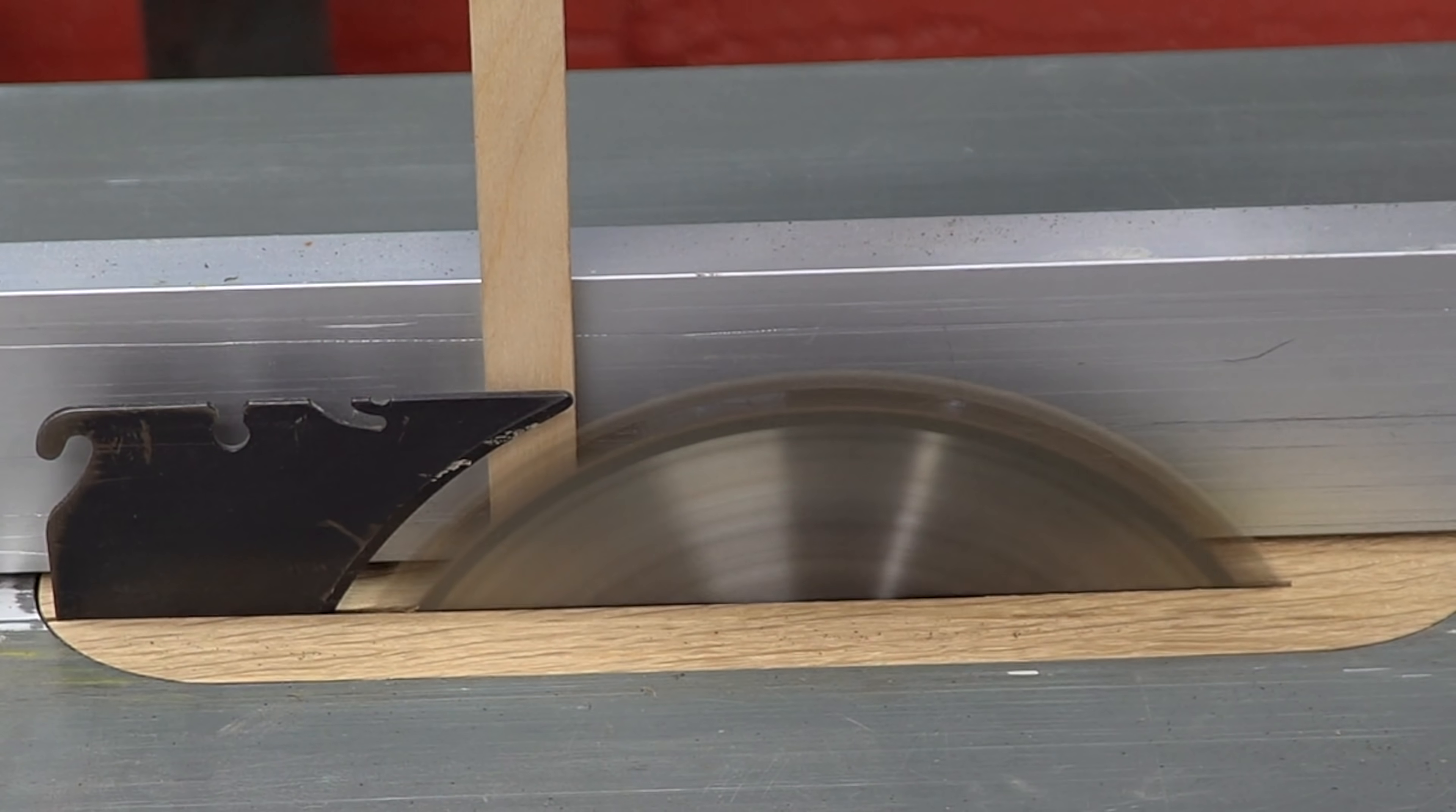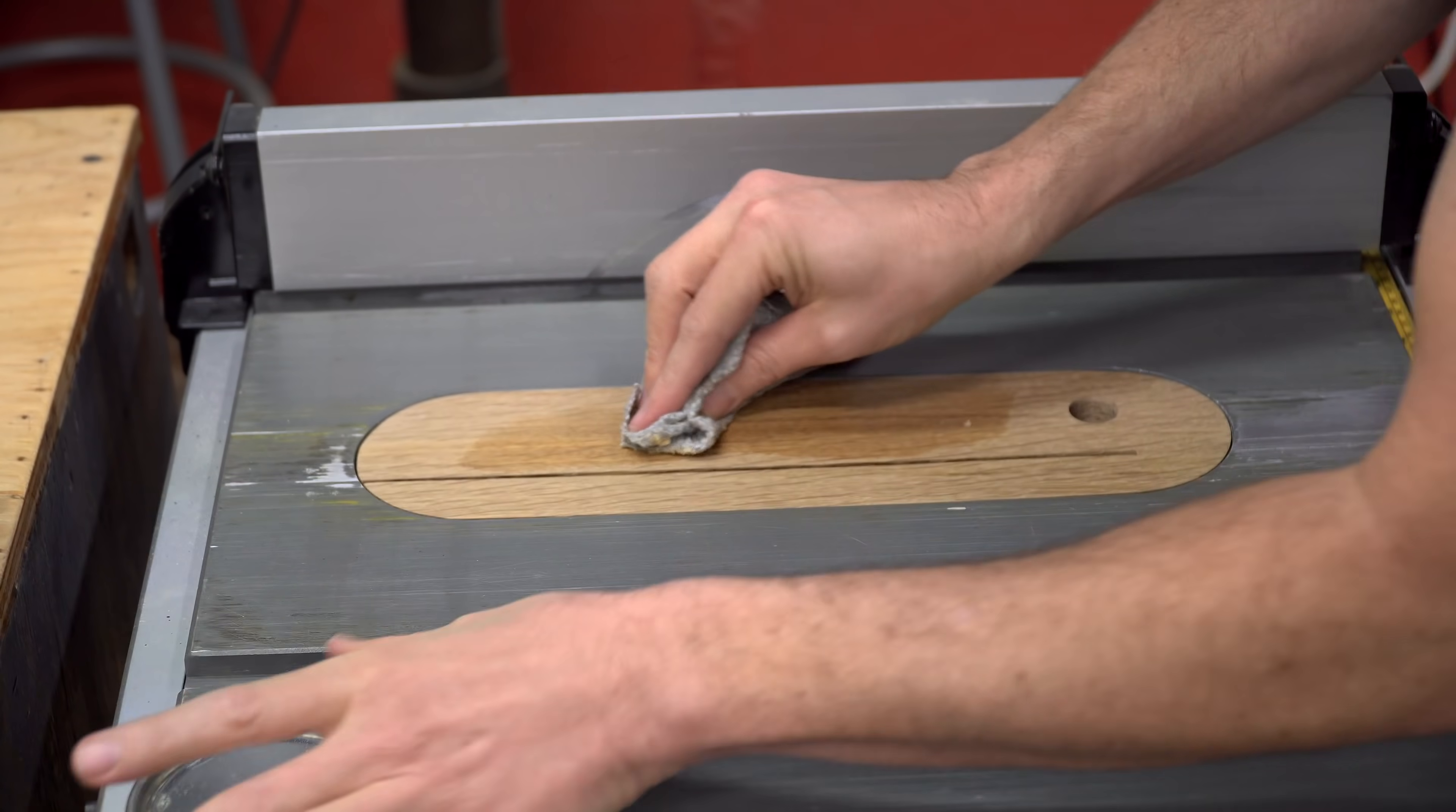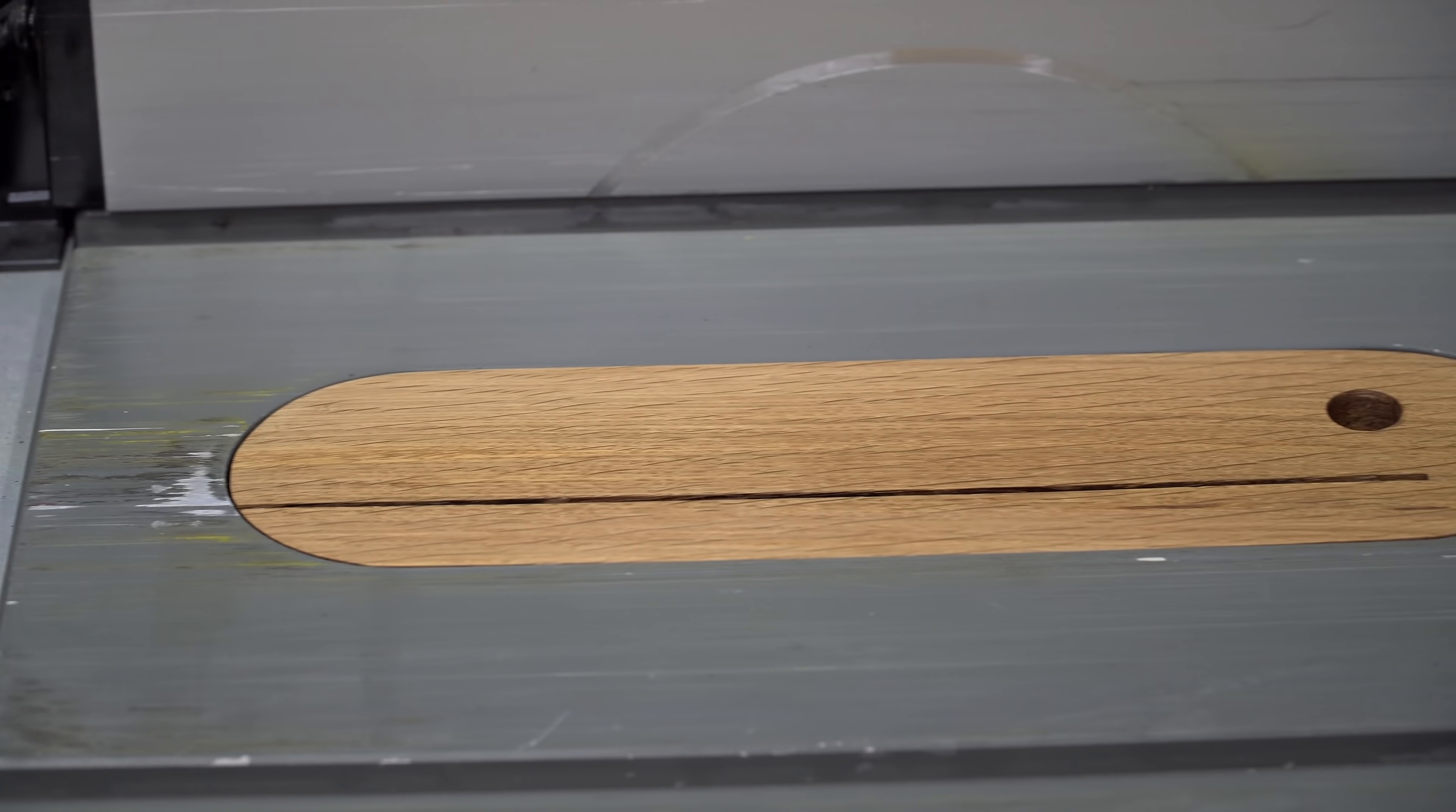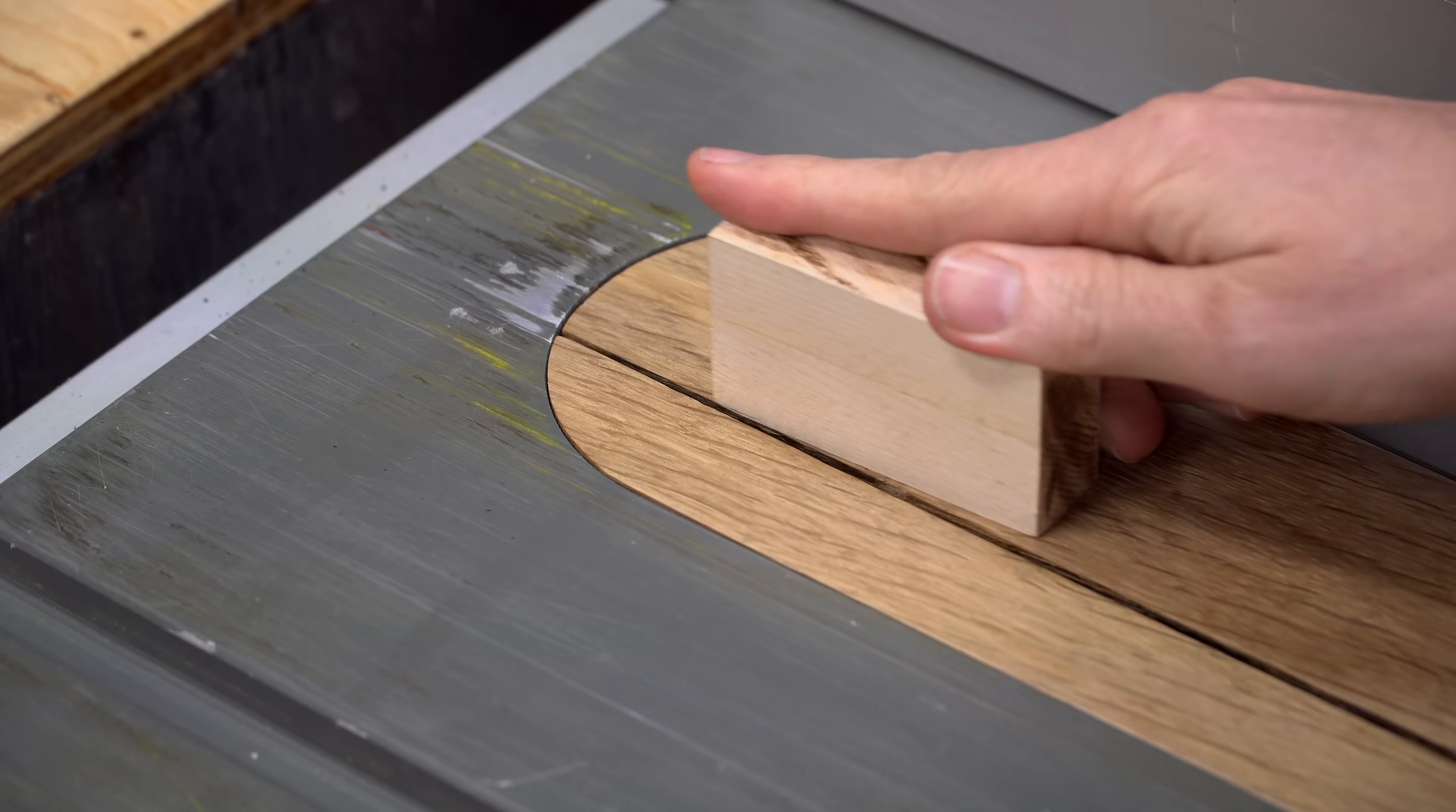I finished cutting the blade slot and then applied a generous coat of paste wax. At this point, the insert was perfectly flush with the table, but it still suffered from the same flex as the original.